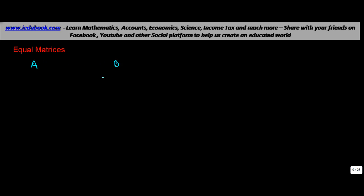In this video we are going to learn about equal matrices. Let's say you have two matrices A and B, and they comprise of various elements which are generally referred to as Aij for matrix A and Bij for matrix B, where I and J represent the various elements of each matrix.